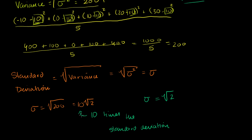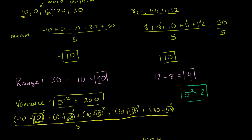This hopefully makes intuitive sense. The first data set has 10 times more standard deviation than the second. We calculated variance by taking each data point, finding how far away it is from the mean, squaring that, and taking the average — then taking the square root to make the units look nice. The end result is that the first data set has 10 times the standard deviation as the second, which makes sense: where the second set's values are only 1 or 2 away from the mean, the first set's values are 10 or 20 away. So the standard deviation gives a much better sense of how far away, on average, we are from the mean.